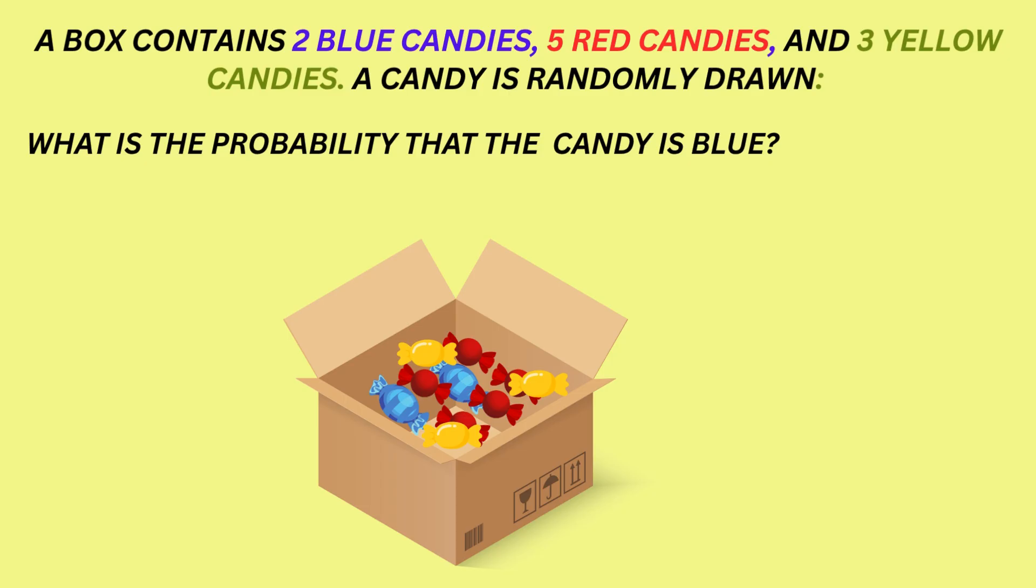We can use B to represent the event that the candy is blue. So, the probability of B would be 2 tenths, since there are only 2 blue candies from a total of 10. We can simplify the fraction to 1 fifth.